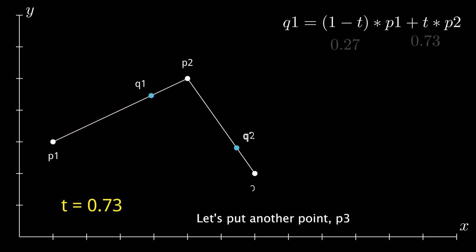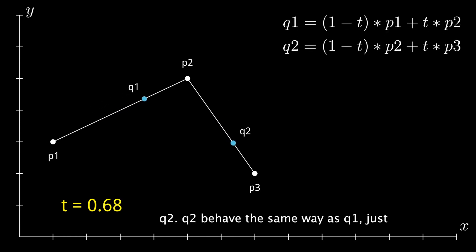Let's put another point P3 and another point Q2. Q2 behaves the same way as Q1, just between P2 and P3. Now, we're going to do the exact same thing with Q1 and Q2 as well and put a point R1 between them.